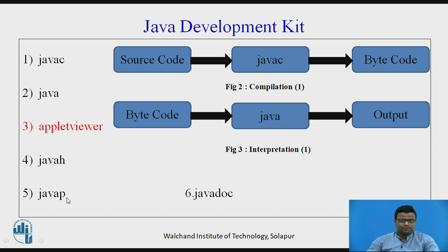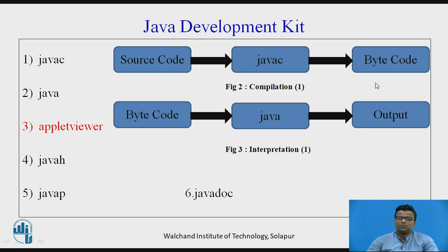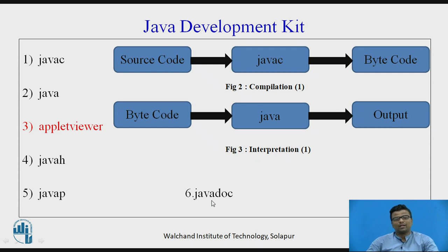JavaP is used to convert byte code into source code — that is a reversible process. We have source code, convert it to byte code, then to machine code for output. But if we have a class file (byte code) and want the source code back, that is possible with JavaP. Java Document is used to create HTML pages or XML pages.